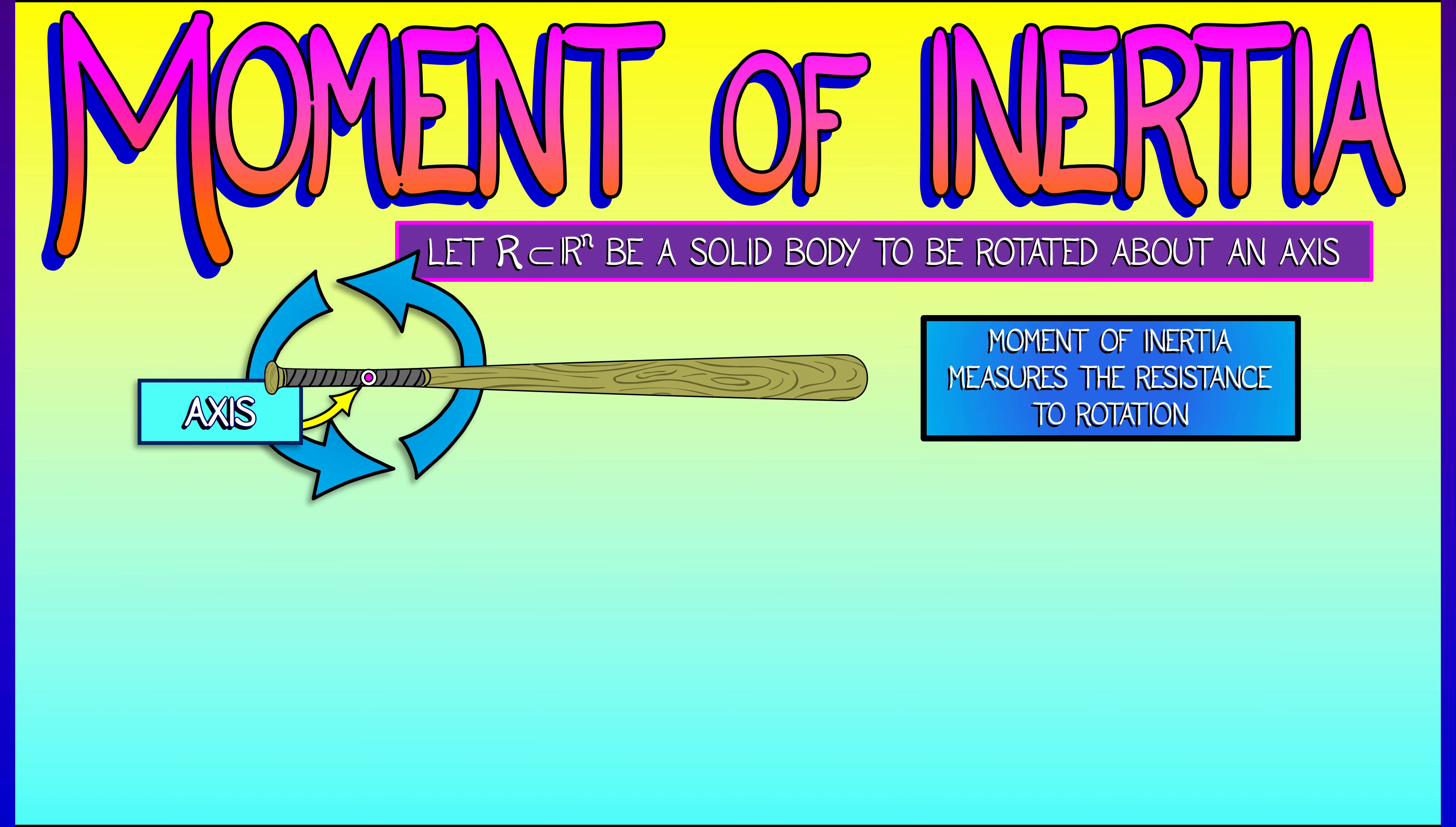We denote the moment of inertia as capital I, and it is the integral of the moment of inertia element dI over this region R, where dI equals R squared dM.